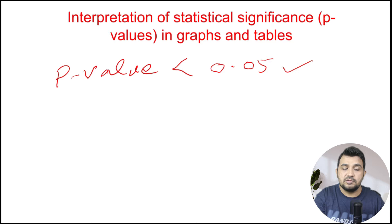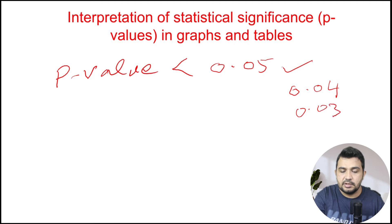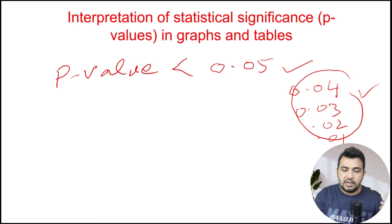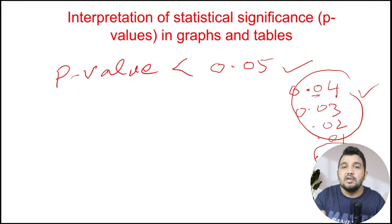Let's understand which values are less than 0.05. If the p-value is 0.04, 0.03, 0.02, or 0.01, all of these values make the data significant. After the decimal, if we place two zeros, of course the result would be even more significant.